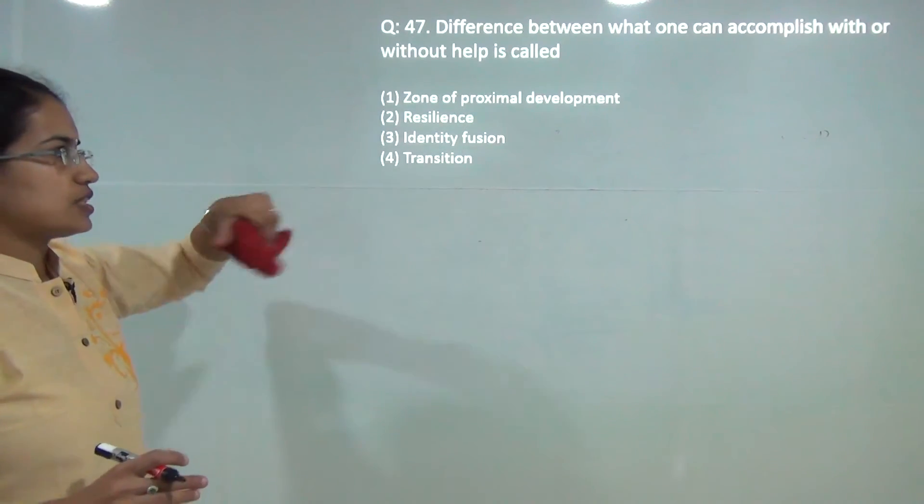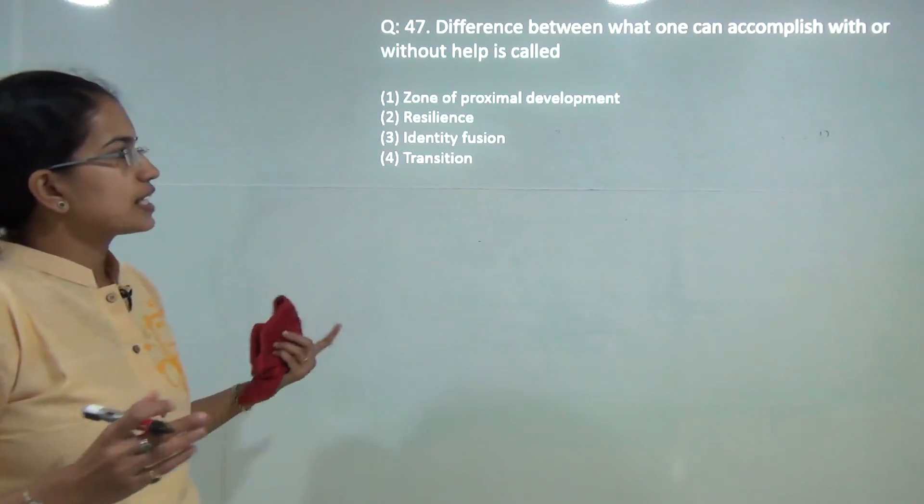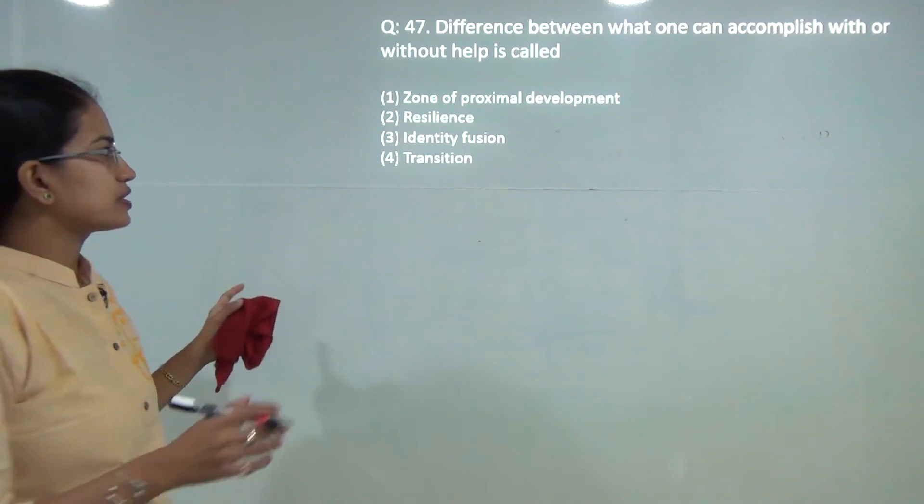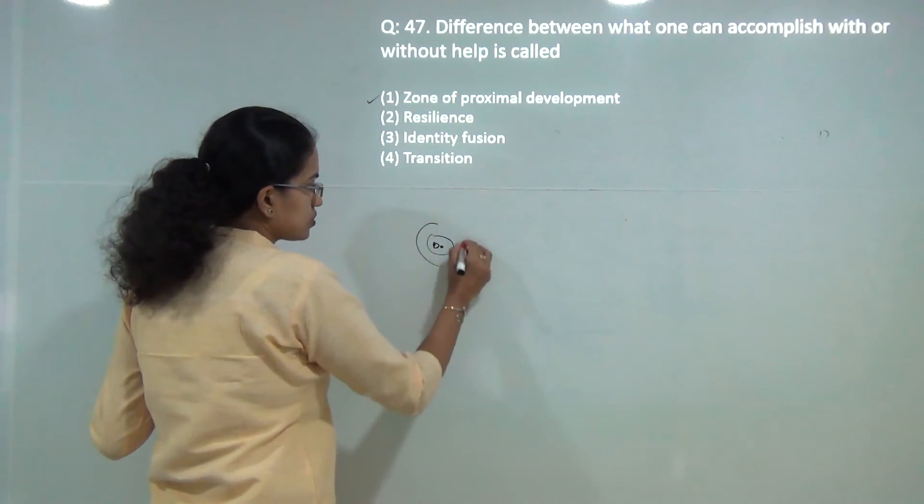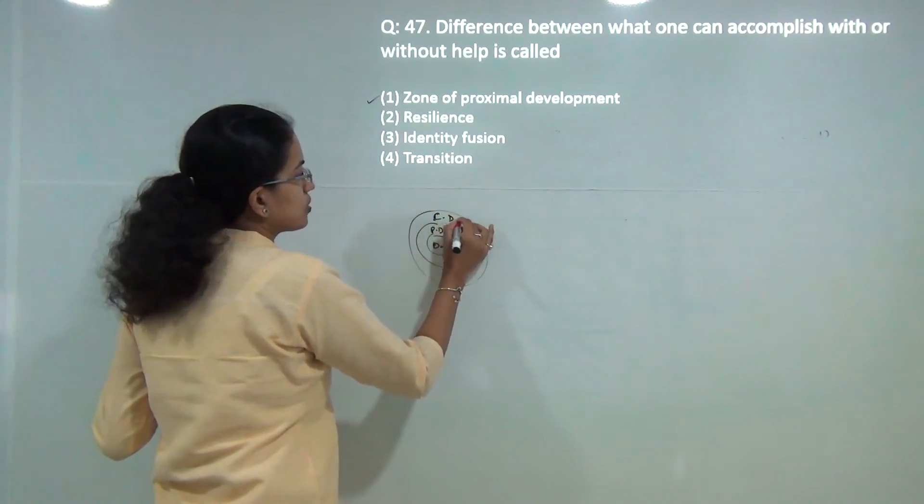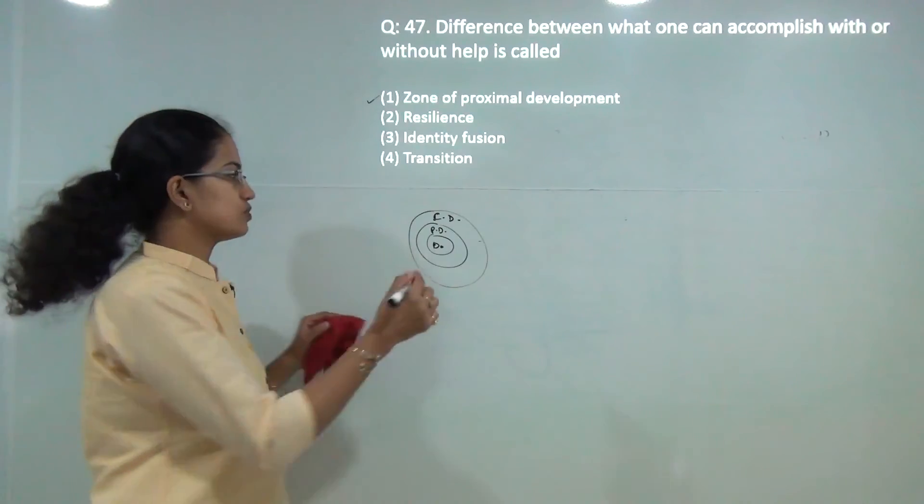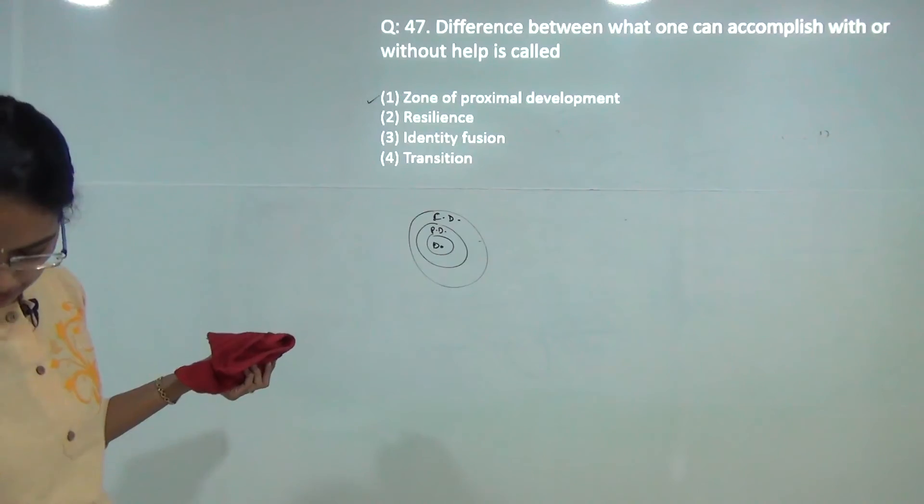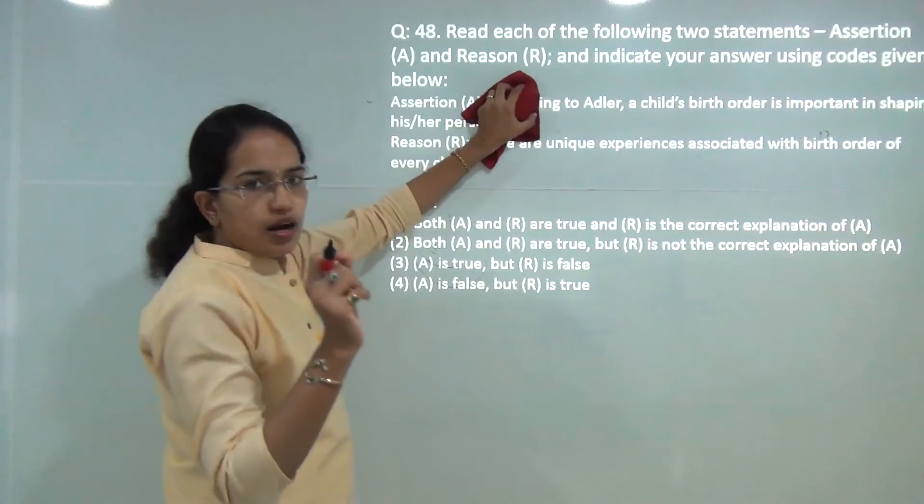This was the question that was asked in July's examination last year as well. The difference between what one can accomplish with or without help is known as the zone of proximal development. You have the zone where you can do, the zone of proximal development where you can do with guidance, and where you cannot do. So those are the three zones and this is the zone of proximal development. That is the correct answer for this question.